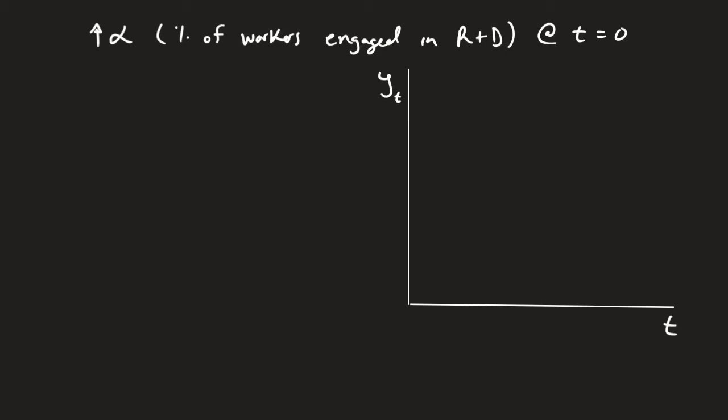This is in the Romer model. What we need to remember is that the growth rate of Y is equal to 1 over 1 minus beta times the growth rate of A, plus beta times the growth rate of K, assuming we're not in the steady state.